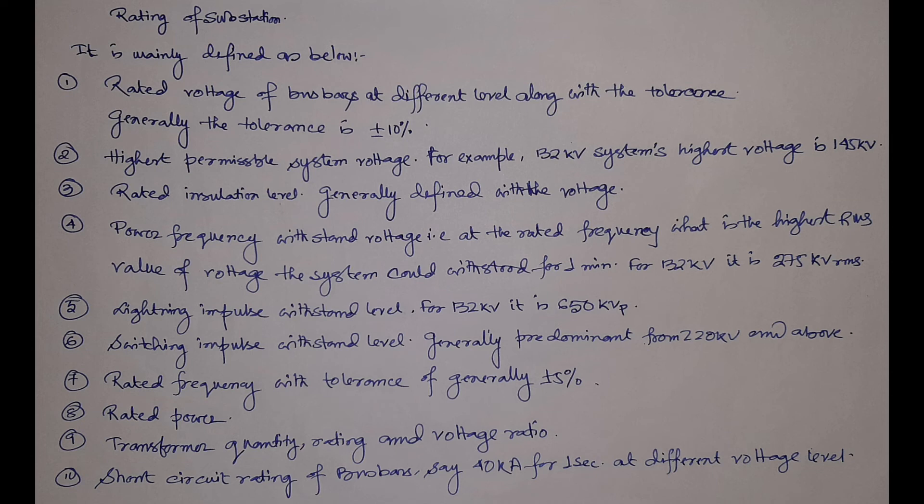Then comes the rated frequency with tolerance — frequency tolerance is ±5%. In many countries the rated frequency is 50 Hz and in others it is 60 Hz. Then the rated power — how much power the substation is handling — which is basically the rating of the main power transformer. Then comes the transformer quantity, rating, and voltage ratio — you must mention how many transformers will be used, their ratings, and voltage ratios.